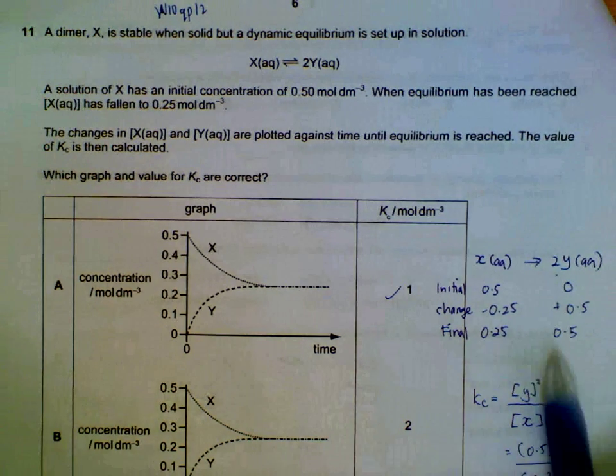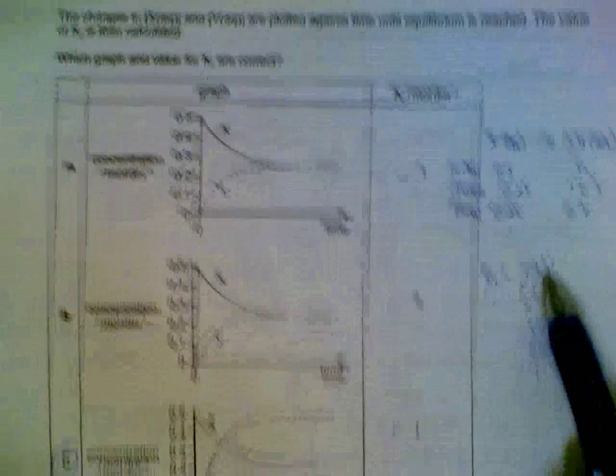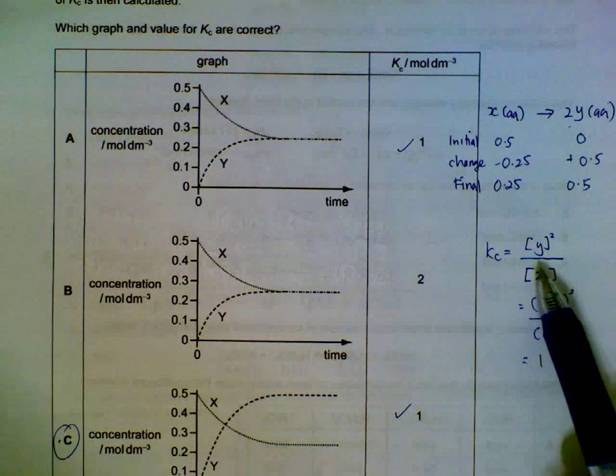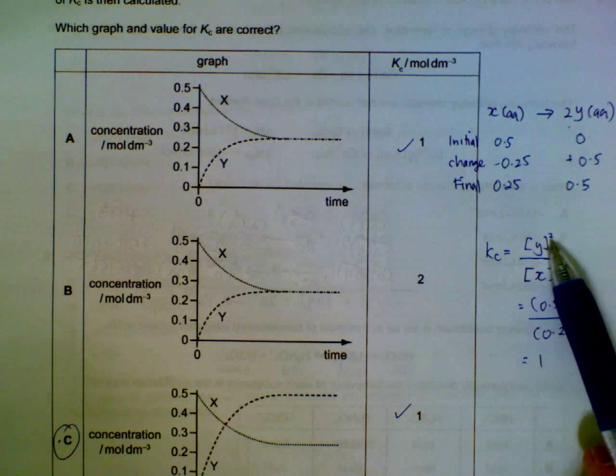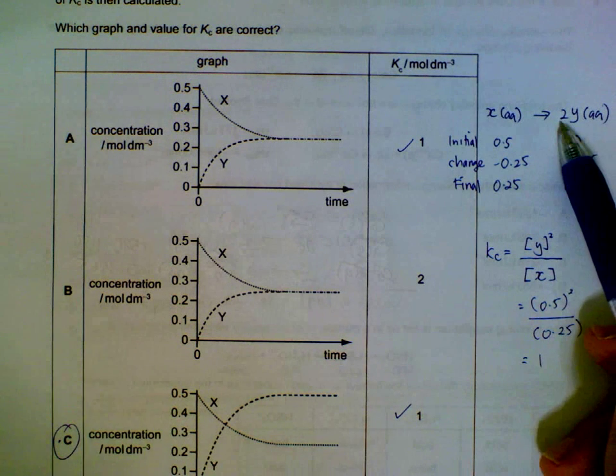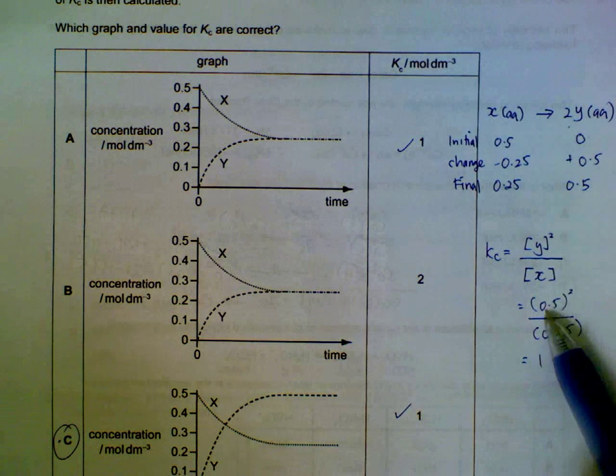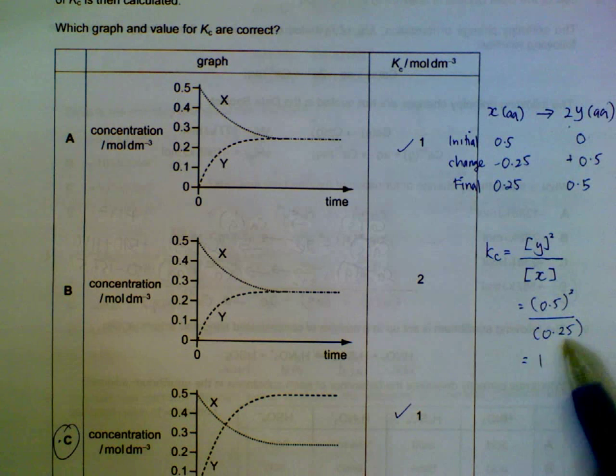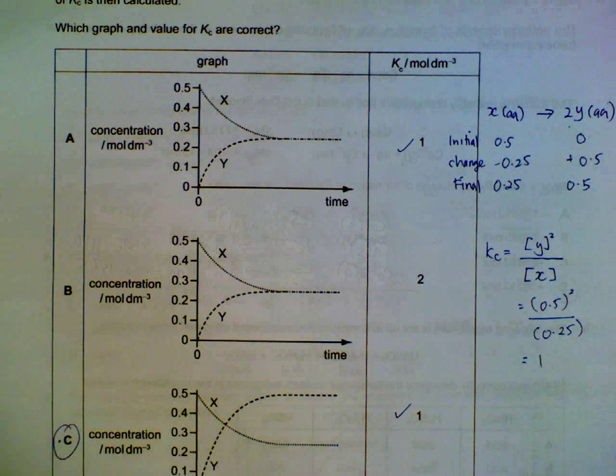Once we have these numbers, we substitute inside the equilibrium constant expression. Remember to square the y because of the 2 here, so 0.5 square over 0.25, we calculate it to be 1.